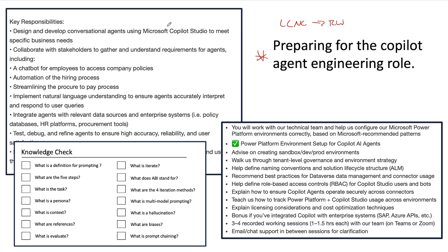Here's a great job that I found. The key responsibilities: obviously, co-pilot Studio — you're going to have to know that. Collaborate with stakeholders — people in the business and their different verticals, HR, accounting, whatever — and gather requirements for the agents, including a chatbot for employees to access company policies.